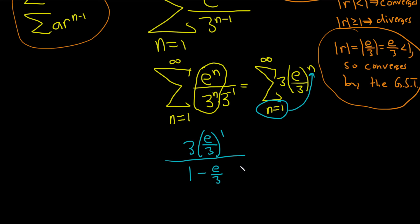Let's simplify this. These cancel, that's nice. So this is e over 1 minus e over 3. Let's write that as 3 over 3 minus e over 3 so we can perform the subtraction. This is e over, now we can subtract, 3 minus e over 3.